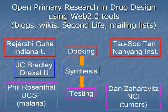Before that, we have Rajarshi Guha at Indiana University, who's doing docking for us — he's telling us which compounds to make. Once we make those compounds, we ship them off to various places. Recently, Phil Rosenthal at UCSF has been kind enough to do testing against falcipain-2, the enzyme he's isolated in his lab, as well as general anti-malarial activity. We're trying to do this as openly as possible. Can we do drug development in a completely open way?